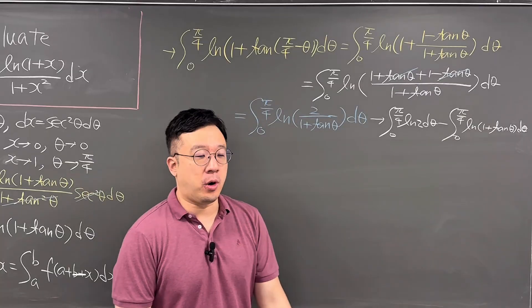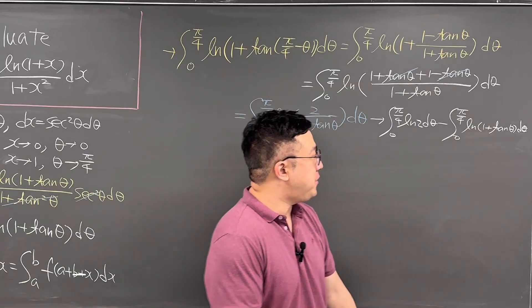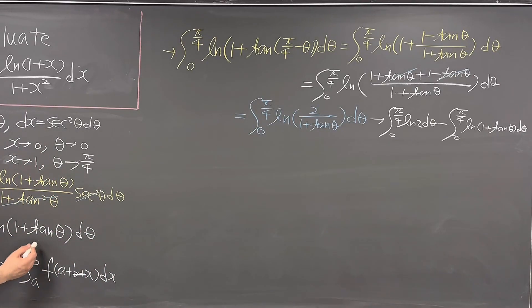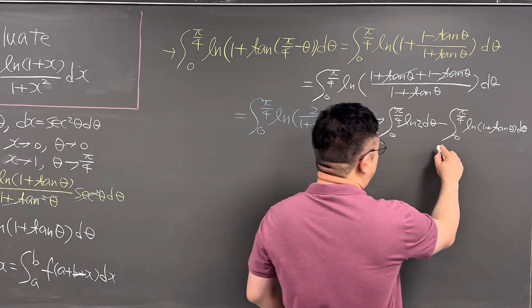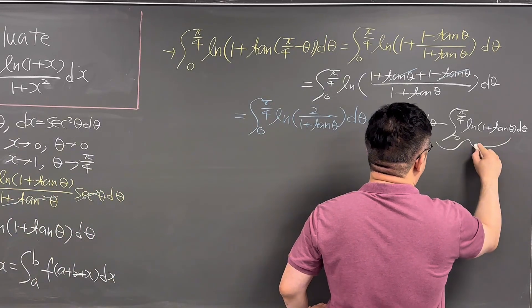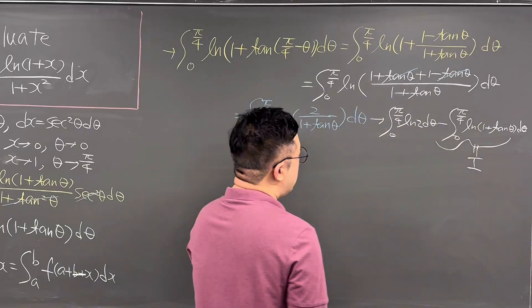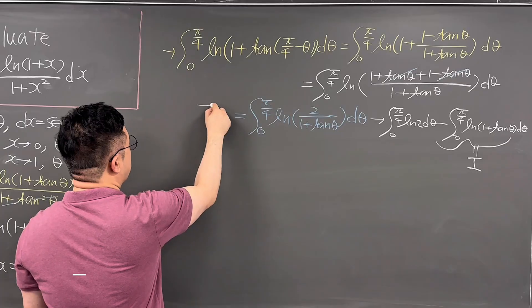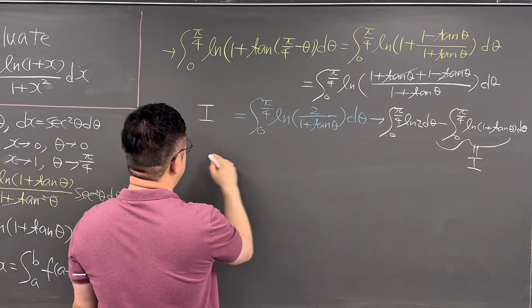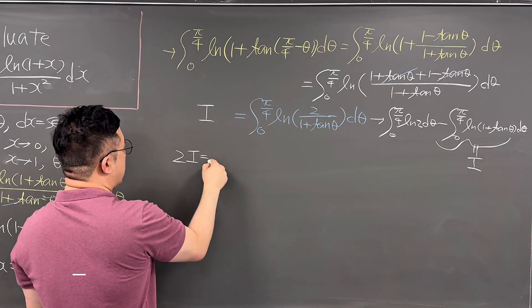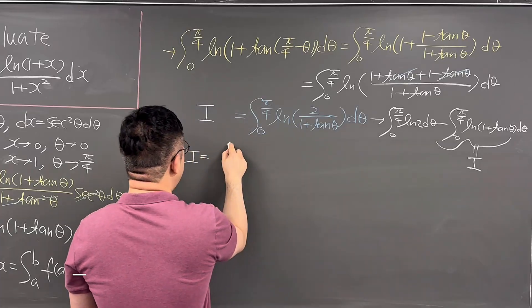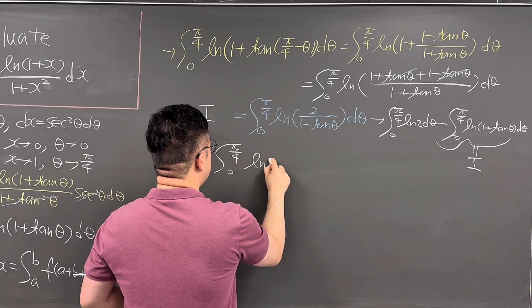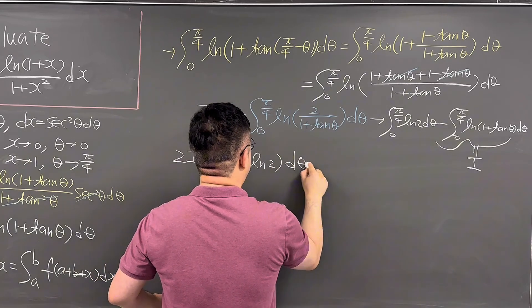The second integral — the integral from 0 to pi over 4 of ln of 1 plus tangent theta d theta — is just I. So since that second integral equals I, we can move it to the left-hand side. We get I plus I, which is 2 times I, equal to the integral from 0 to pi over 4 of ln 2 d theta.